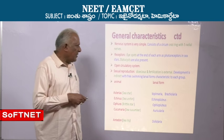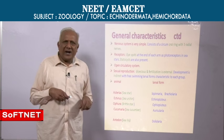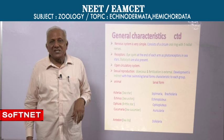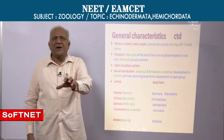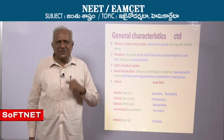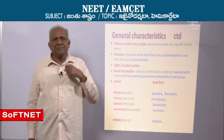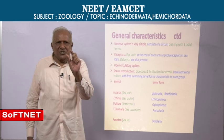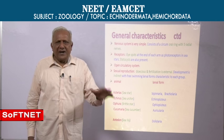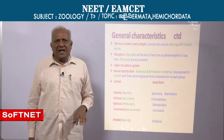In sea urchins you find a pyramid-shaped jaw apparatus called Aristotle's Lantern, used for cutting seaweeds into fine bits. It is not present in all echinoderms — only in sea urchins. Pedicillariae are unique pincer-like structures with jaws, helpful in keeping the body clean, defending the body, and capturing food. Pedicillariae are present only in two groups: sea stars and sea urchins. They are absent in sea lilies, sea cucumbers, and brittle stars.